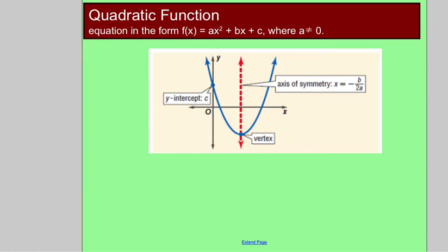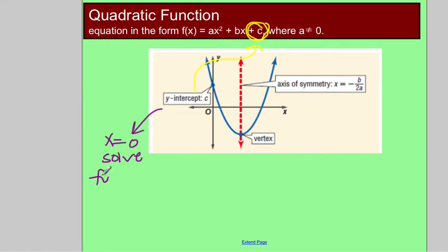Some things we want to know: the y-intercept is c in our equation. Another way to always find your y-intercept is when x equals zero — let x equal zero and solve for y. Another important thing is the axis of symmetry, which is x = -b / (2a). That's the equation you need to know. Your b and your a values are used to find the axis of symmetry.